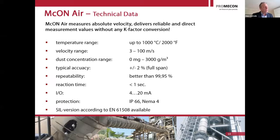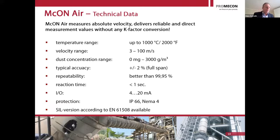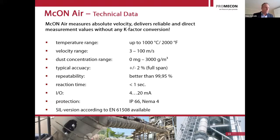We are talking about velocity measurements of gases ranging up to 1,000 degrees C, or 2,000°F. Velocity ranges are between 3 and 100 meters per second. Our system is a linear measurement — we do not have a squared relationship like delta pressure measurements. So we have a very wide and linear measurement span.